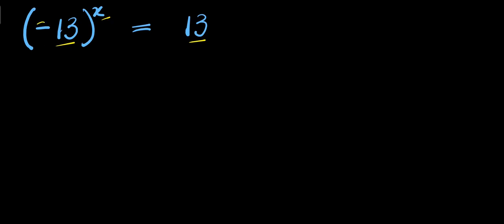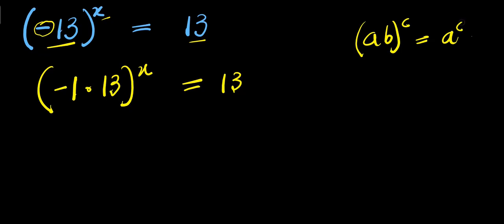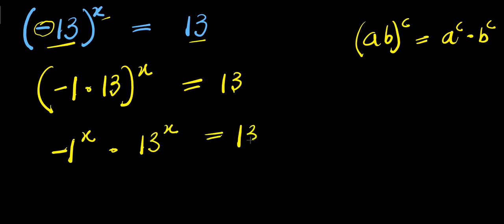Now, this is negative here, so let's express negative 13 as negative 1 times 13, raised to the power x, and this equals 13. Now if you have a times b raised to the power of c, this equals a to the power c times b to the power c. So this gives us negative 1 to the power x times 13 to the power x, and this equals 13.